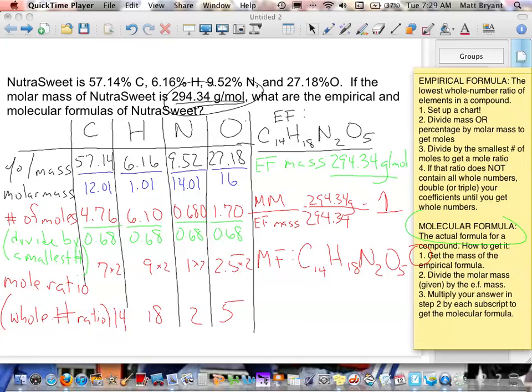We don't even really need to do any math here, because the molecular formula is the same as the empirical formula, C14H18N2O5. Lots of big numbers, but nothing we can't handle. As long as we set up this chart that's over here on the left, we should be able to do any of these problems that somebody throws at us, and that somebody will be me. Thanks for watchin'.